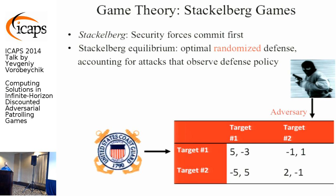You might ask how the attacker knows the randomized patrolling policy. We posit the attacker has significant time to conduct surveillance, which is pretty standard. They'll spend time recording and documenting where defensive resources are, making inferences and responding. We're taking the limit of that process.